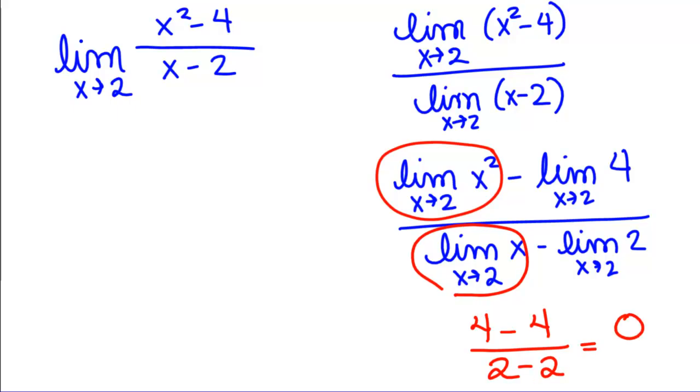What we get here is 0 over 0. What does that mean? What is that telling us?